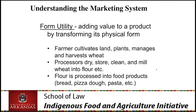Soft wheat is used for crackers. Hard wheat is used for bread products because it has a higher protein level and therefore a higher gluten level that gives elasticity to the dough. We can go through the same drill with an egg — it's laid, washed, graded, and perhaps sold to a market as a shell egg, or sold to a breaking plant into liquid eggs used in the baking industry. That's form utility.